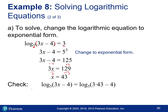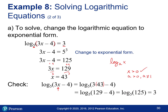You want to check your solution because for log functions the argument must be positive. Also, when solving for the base, it must be positive and can't equal one. Plugging in x equals 43, we get log base five of 125, which is greater than zero — good. And five to the third power is 125, which is correct. So x equals 43 is our answer.